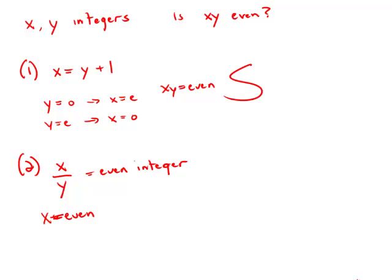an odd number by something and get an even number. So the fact that x is an even number means that when you multiply it by anything it will still be even.